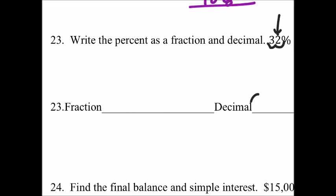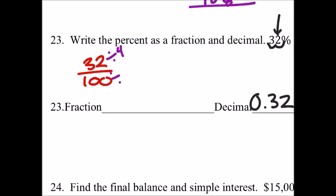That's our decimal — 0.32, which as a fraction, 32% would be 32 over 100. Make sure you simplify this as much as you can. These are both divisible by 4. You could have done them by 2 if you wanted to. That would be 8 over 25. That'll do.